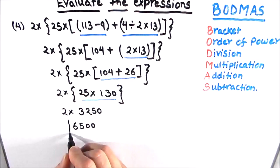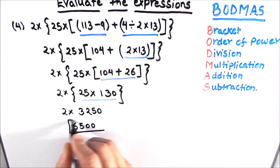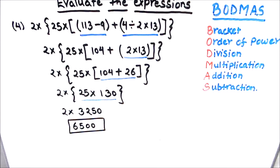This is how we solve these types of expressions. The BODMAS rule gives us the priority and tells us the order in which operations need to be solved. I hope this video is helpful to you. If you like the video please hit the like button and subscribe to my channel for more math videos. Thanks for watching.